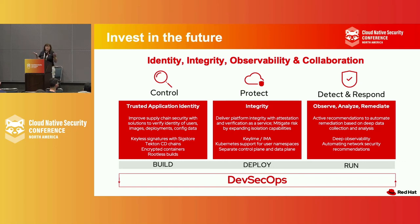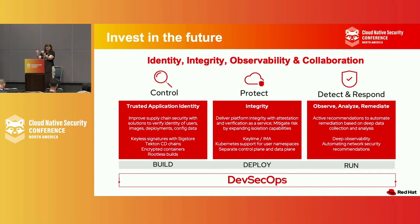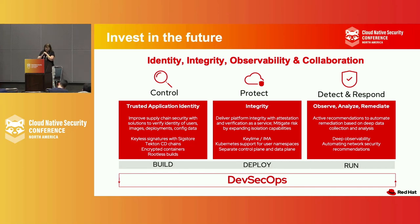For the runtime: deep observability is absolutely key, and the ability to use collected data to automate response — not just network policy, which is a great thing to help automate, but also automated response to vulnerabilities in the runtime environment. We need a better risk assessment: are those vulnerabilities in pods actually exposed to the network or not? What's my level of risk so I can triage better? Active recommendations are really key, along with that ability to respond.